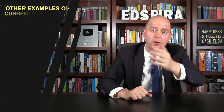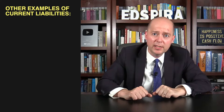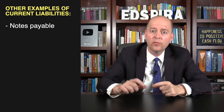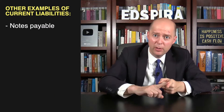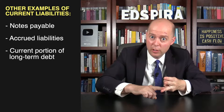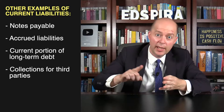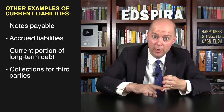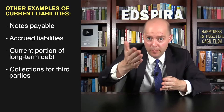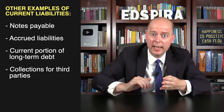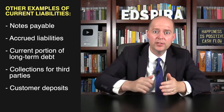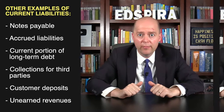Here are some other accounts you might see listed as current liabilities. You've got notes payable, accrued liabilities, the current portion of long-term debt, collections for third parties such as sales tax payable and payroll-related liabilities, customer deposits, and unearned revenue.